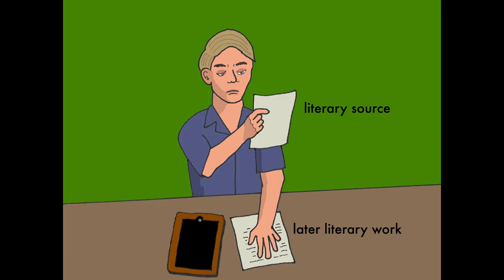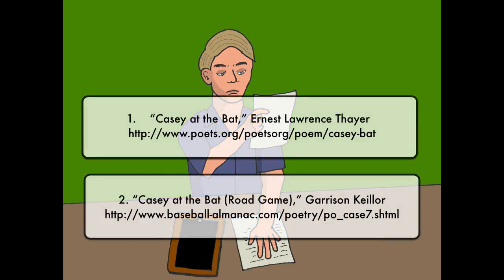So let's take a look at a short example, and I'll do an analysis. You can watch and learn before you try it yourself. Follow these two links and read these two poems. Start with Casey at the Bat by Ernest Lawrence Thayer, and follow it with Casey at the Bat Road Game by Garrison Keillor. A little warning though — Keillor's poem contains mild profanity. Keillor does have a sanitized version that can be found online as well, but I think this one is better. Okay, read them now.